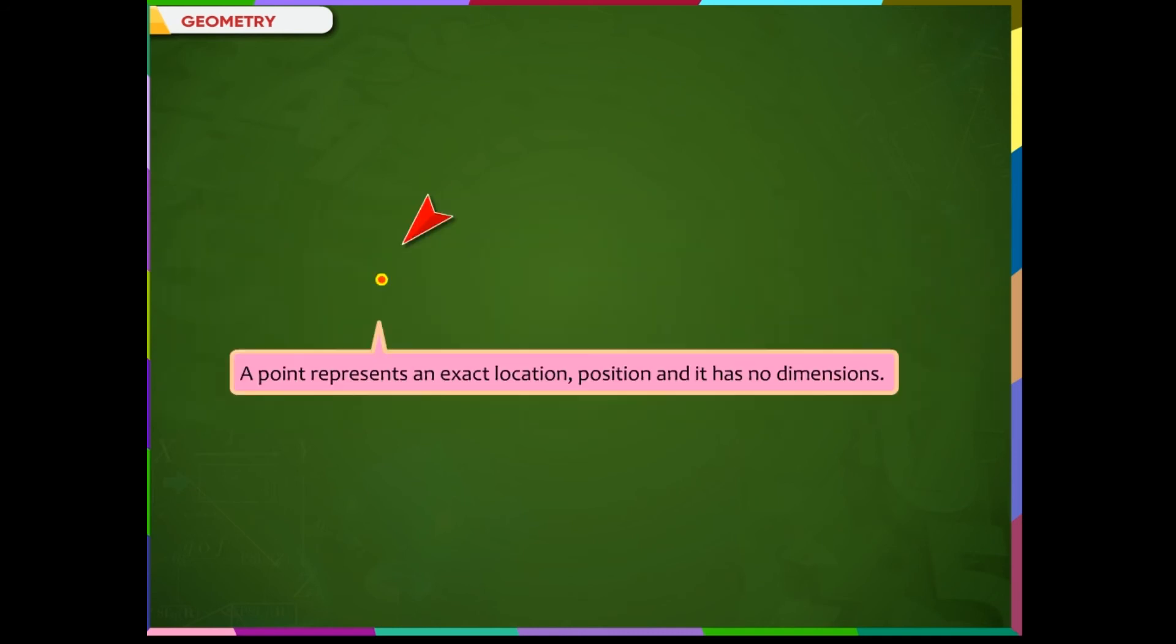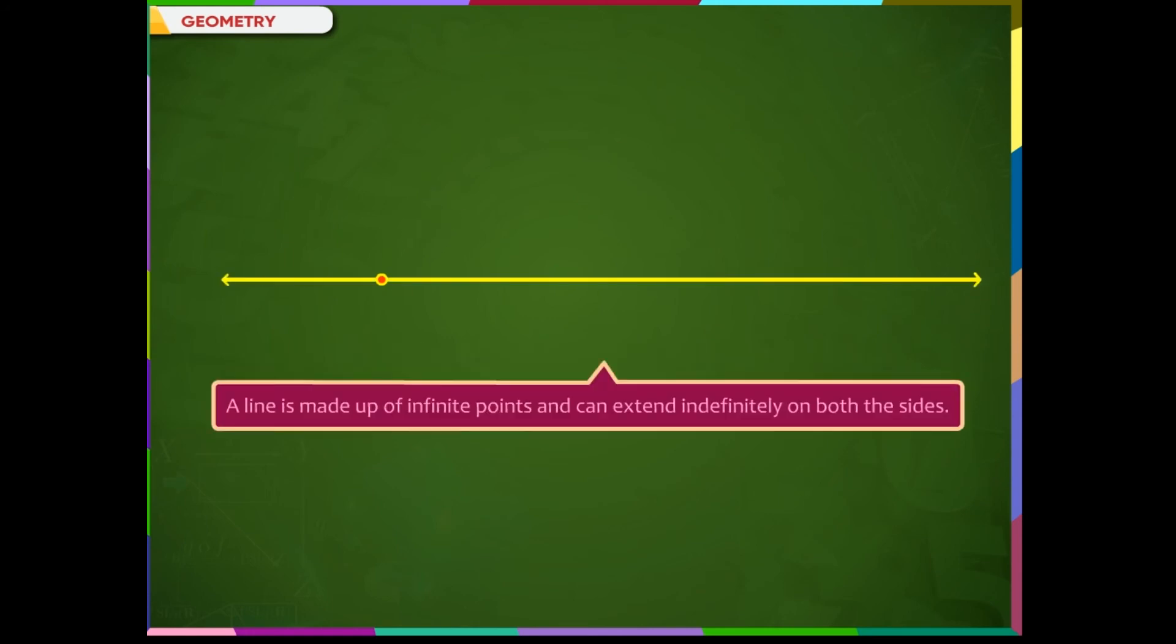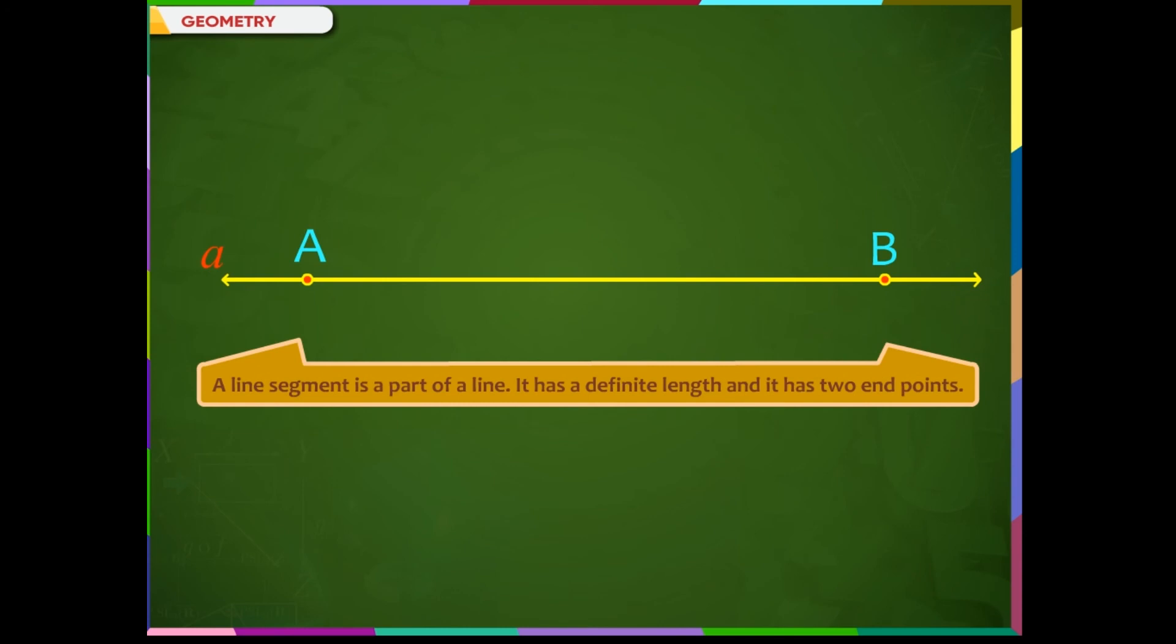Quick recap: 1. A point represents an exact location, position and it has no dimensions. 2. A line is made up of infinite points and can extend indefinitely on both the sides. 3. A line segment is a part of a line. It has a definite length and it has two endpoints. 4. A ray has a starting point and no end point as it extends indefinitely on one side.